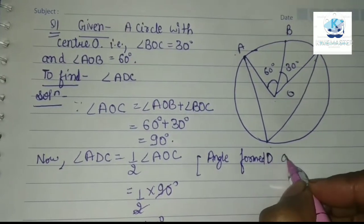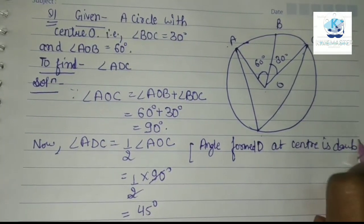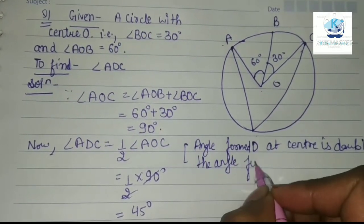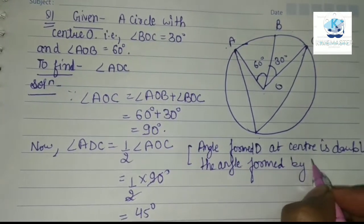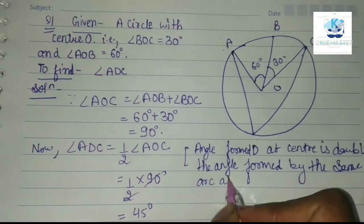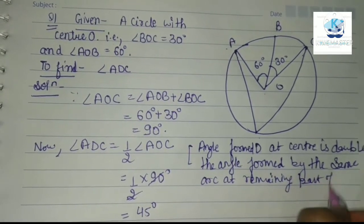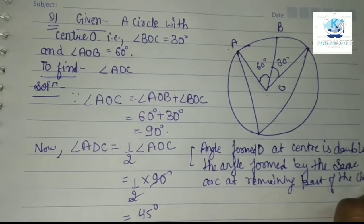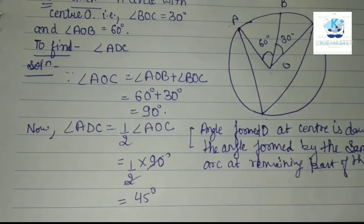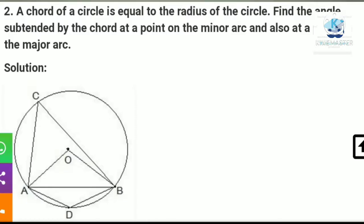The reason we write is: the angle formed at the center is double the angle formed by the same arc at the remaining part of the circle. You must write this full statement — just writing 'theorem' will not do. This was my Question 1, finding angle ADC. Now let's read Question 2.